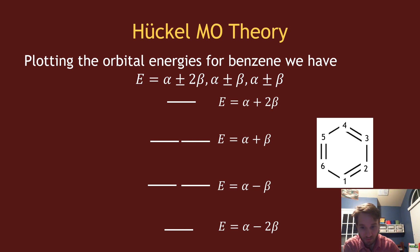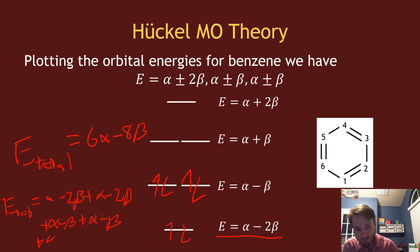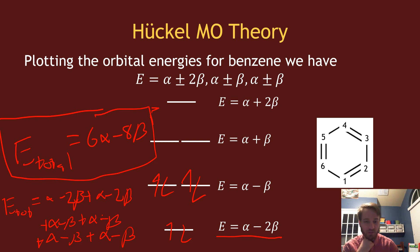There are six electrons, so I fill them in: one, two, three, four, five, six electrons. The total energy for benzene is six alpha minus eight beta. Each electron occupying the bottom orbital has energy alpha plus two beta; those in the next level have alpha plus beta. Summing the energies of each individual electron in the orbital they occupy gives the total energy of six alpha minus eight beta.